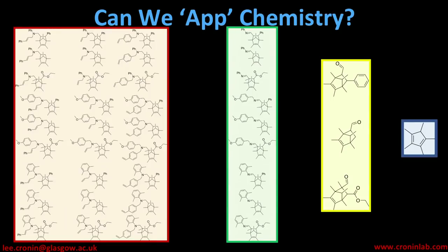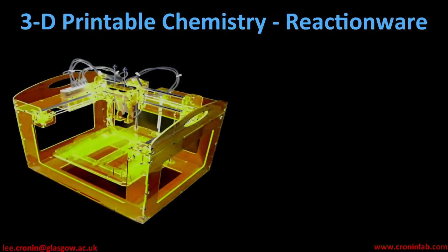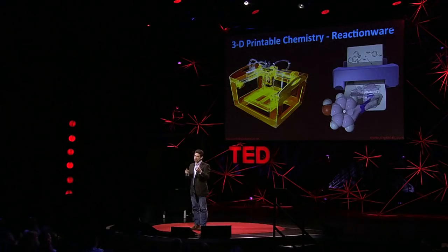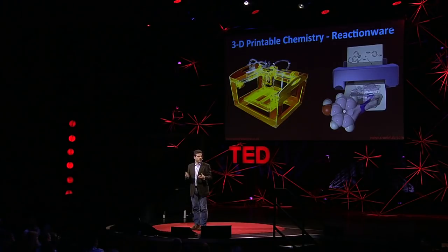Now, what would this mean and how would we do it? Well, to start to do this, we took a 3D printer and we started to print our beakers and our test tubes on one side, and then print the molecule at the same time on the other side, and combine them together in what we call reactionware. By printing the vessel and doing the chemistry at the same time, we may start to access this universal toolkit of chemistry.